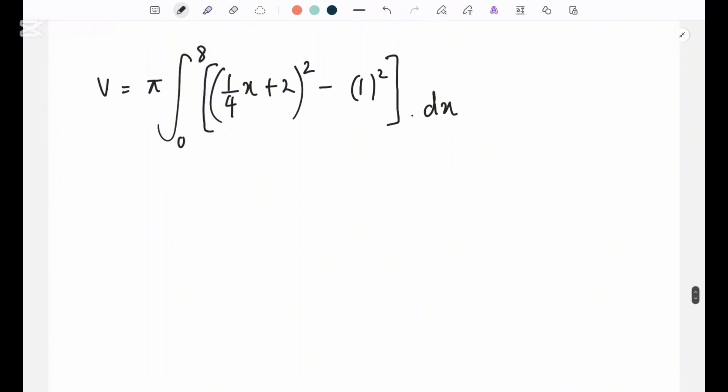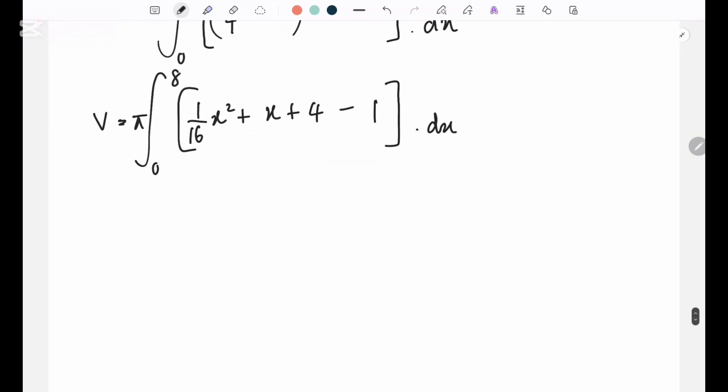So now let's integrate. So 1 over 4x plus 2 when you square you get 1 over 16 x squared plus 1 over 16 x plus 4 minus 1. So 1 over 16 x squared integrated is x to the power 3 over 48, plus x to the power 2 over 2, plus 4 minus 1 is 3 which gives you 3x. So now you can just sub in your values. So I'm going to use the calculator. So I get the volume as 203 pi.